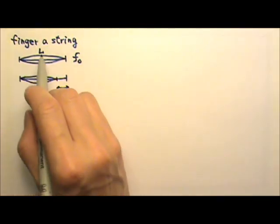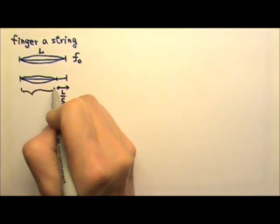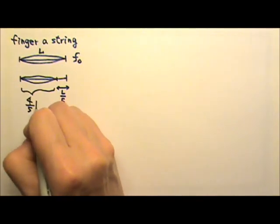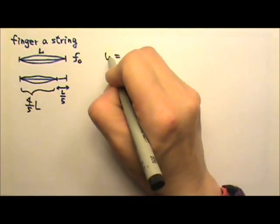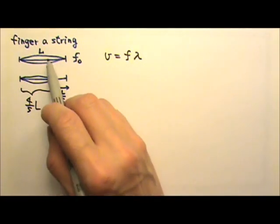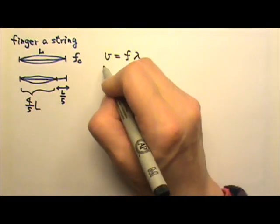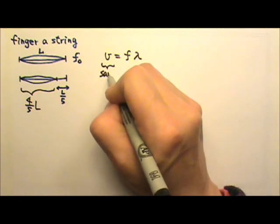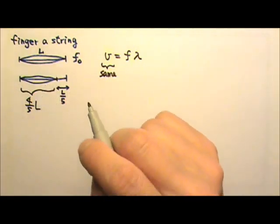The length of a loop used to be L. Now it is four-fifths L. The speed of a wave equals frequency times wavelength. Before and after we finger the string, the speed is the same because it's the same string and under the same tension.